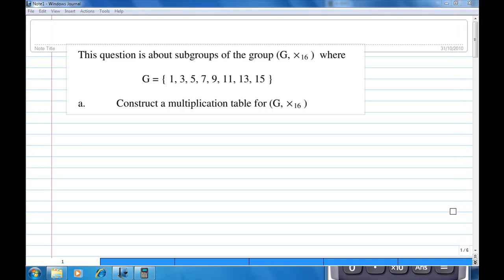Hi, for this recording, I'm going to show you how to construct a Cayley table for a group. This question concerns a group G = {1, 3, 5, 7, 9, 11, 13, 15}. We are going to verify that this group actually satisfies all the group axioms and then answer a question about the subgroup of this group.